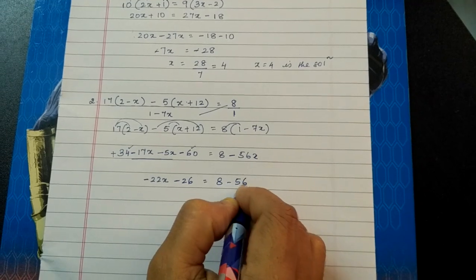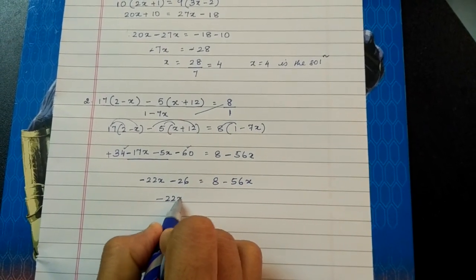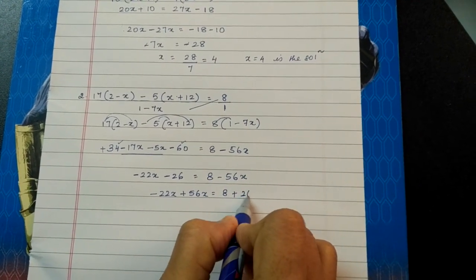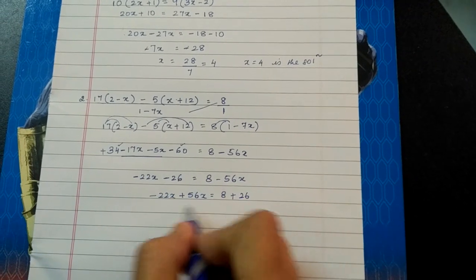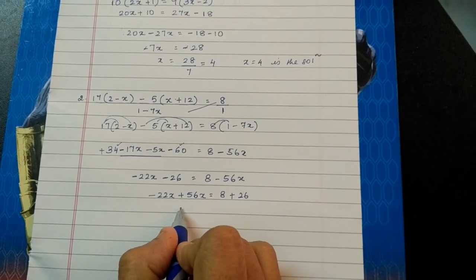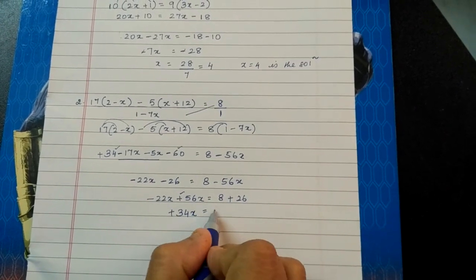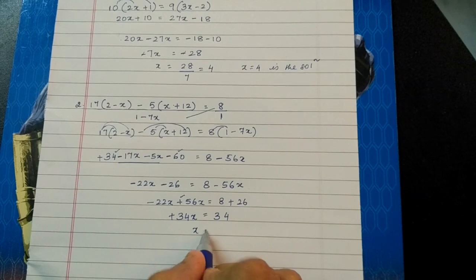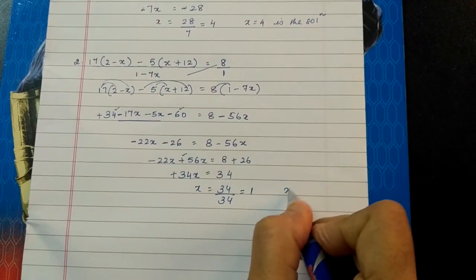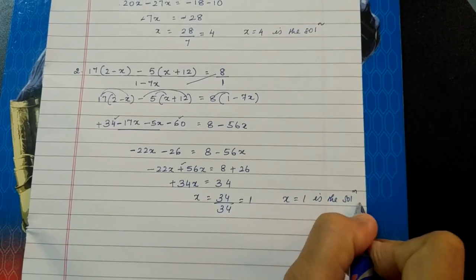Now we have to bring x here. So minus 22x plus 56x is equal to 8 plus 26. We are changing the left hand side to right hand side. One plus one minus will give you subtraction and sign of greater number, and 26 plus 8 is 34. So x is equal to 34 divided by 34 equals 1. So x equals 1 is the solution for this equation.